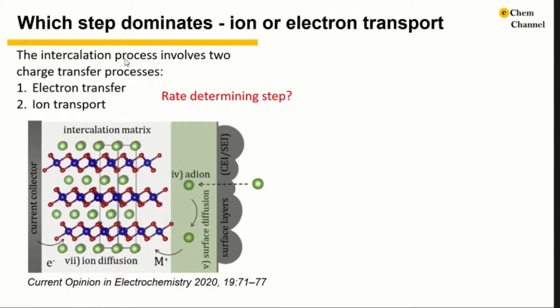The intercalation process involves two major charge transfer processes. The first one is the transfer of an electron from the current collector to the redox active site of the electrode active material. The second one is to transport electrolyte from the bulk solution into the intercalation host. The charge transfer rate is determined by the ratio between the two processes. The slower one is the rate-determining step.